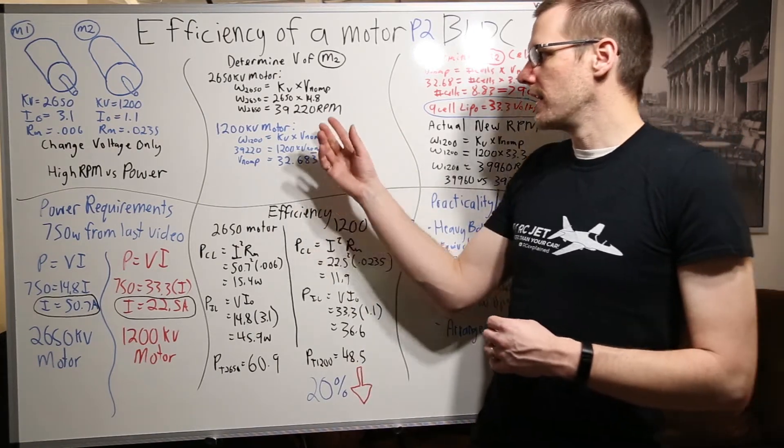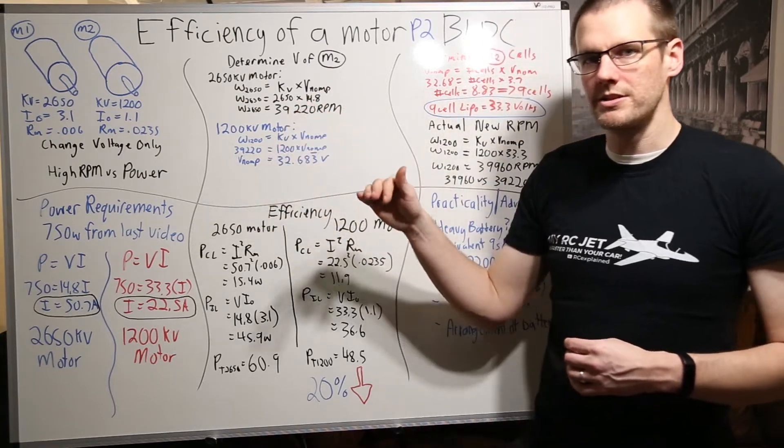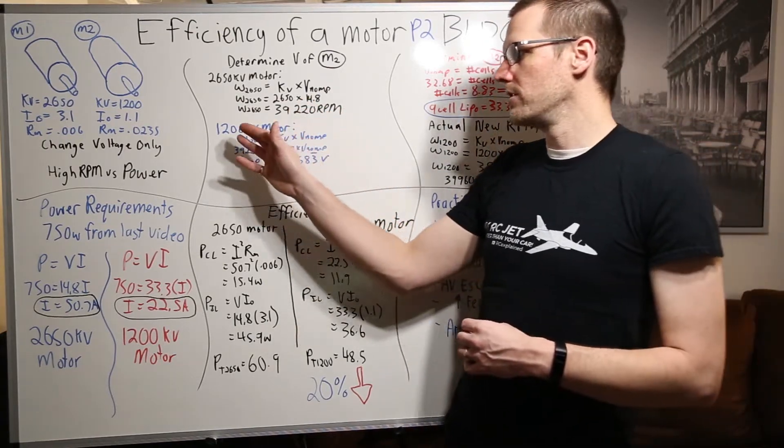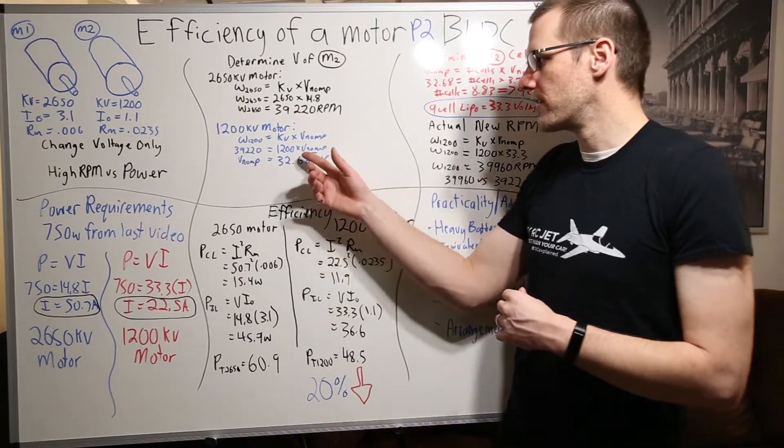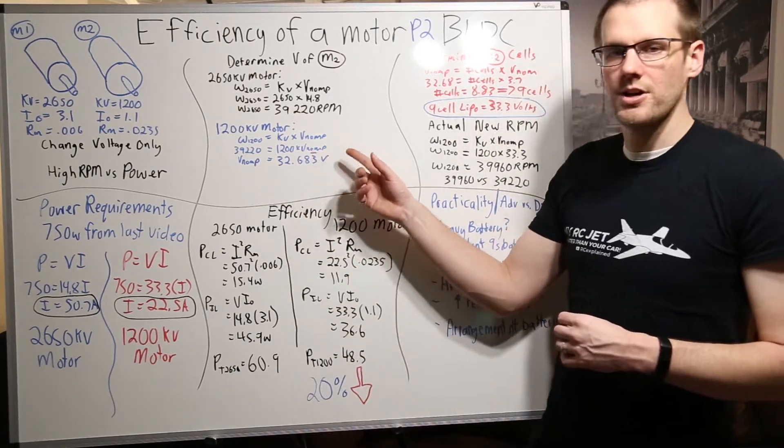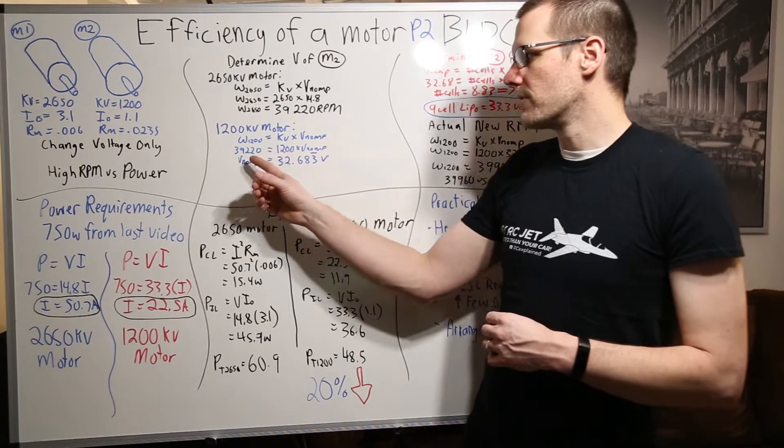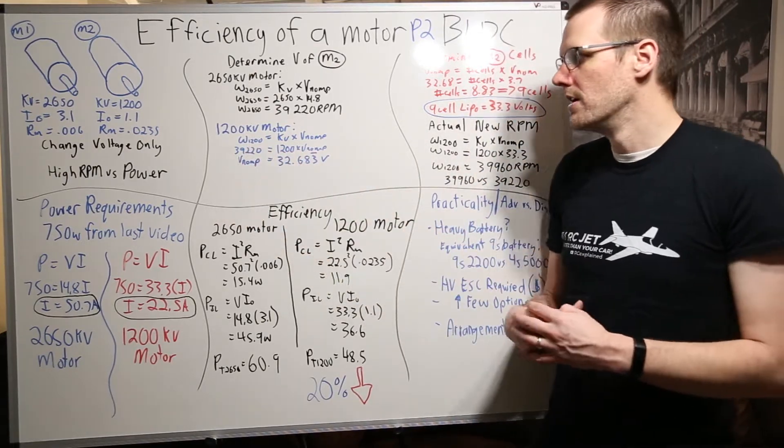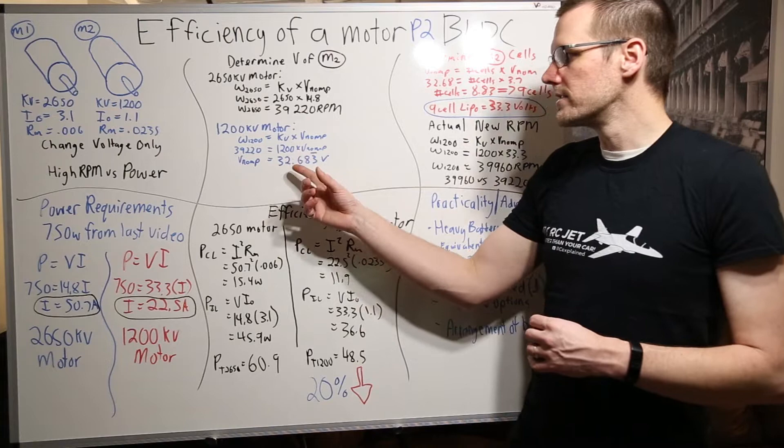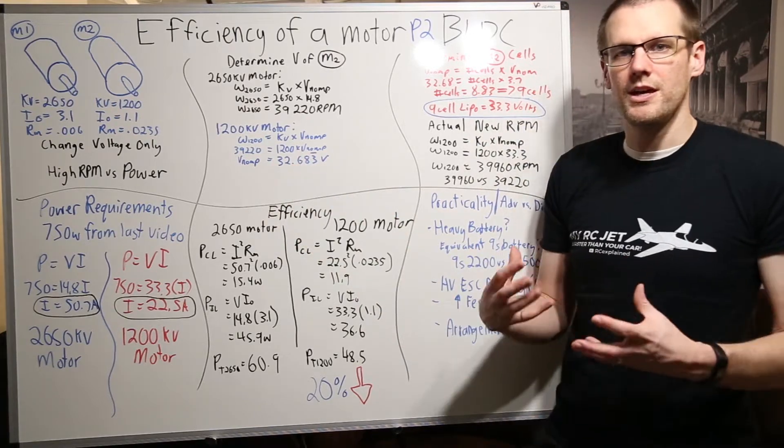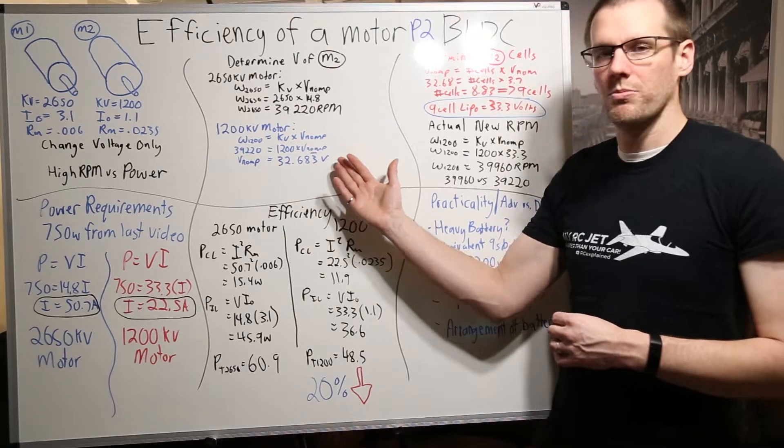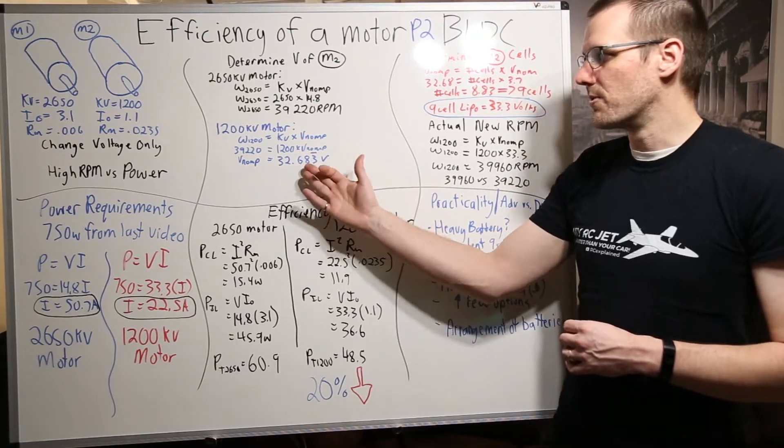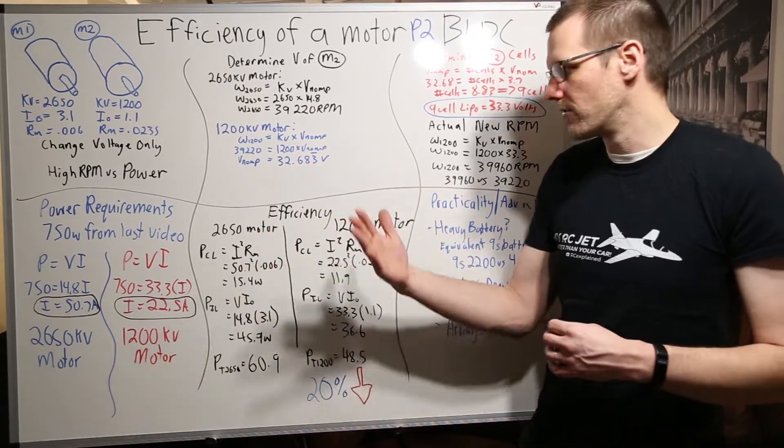We then are able to take that and sub it into the exact same formula however we're going to use our 1200 kV motor specification. We take our 1200 we multiply that by the voltage nominal of the pack and that is equal to our set 39,220. We take the result of this and we get 32.683 bar. Now the bar over the three just represents that that number repeats itself. It's 32.683333 and it repeats.